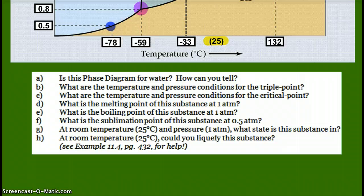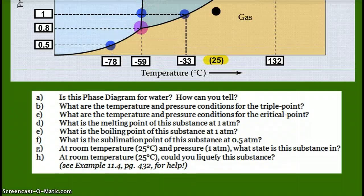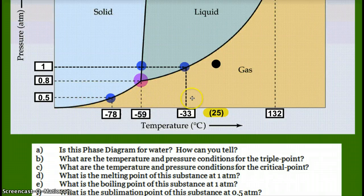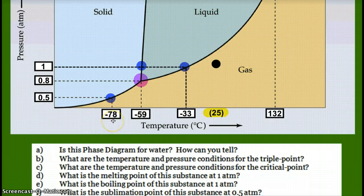What is the sublimation point of the substance at 0.5 atmospheres? That's when we would go directly from solid to gas. So, at 0.5 atmospheres, that would be negative 78 degrees Celsius.